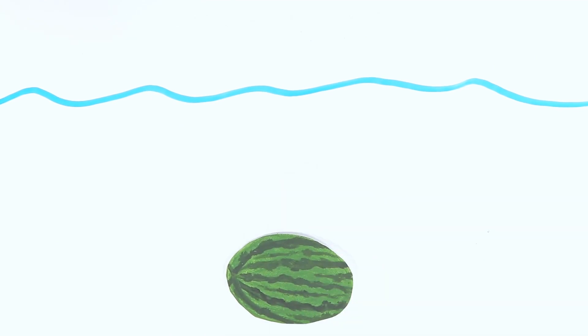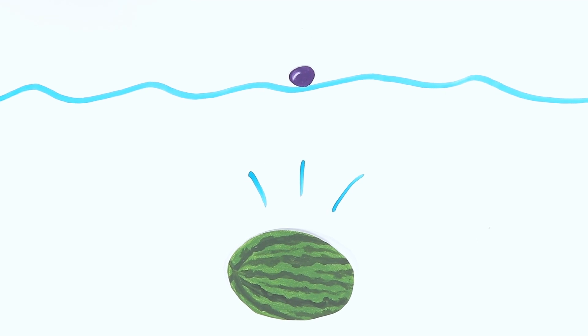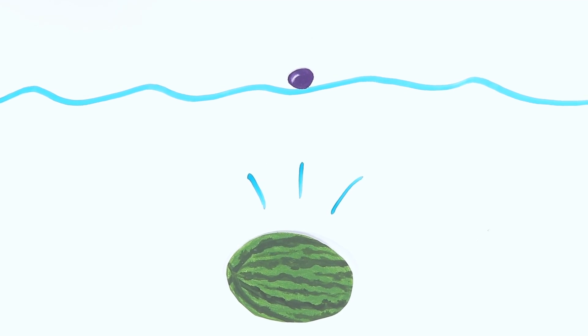For example, in a sink float activity you might say, so let me see if I understand the reason for your prediction. You think the watermelon will sink because it is bigger than the grape?